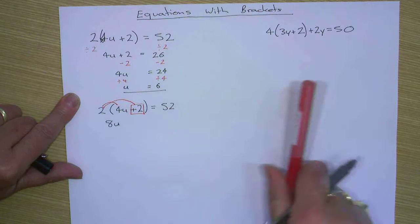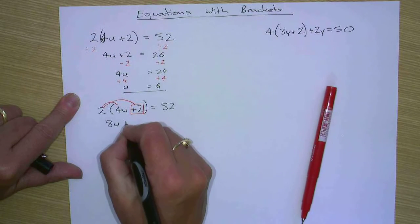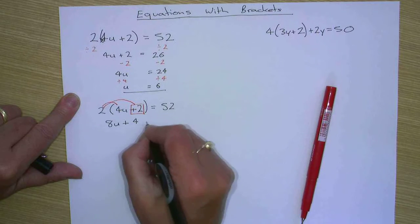Then we do two times the last term, which is plus two. So two times plus two is plus four, equals 52.